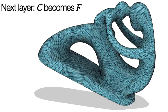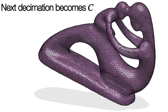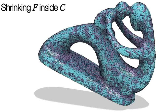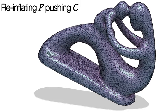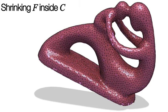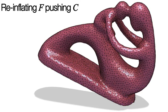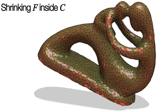Then we move to the next pair, treating the previously computed coarse cage now as the fine mesh and the next input decimation as the coarse mesh. We flow and reinflate. We repeat with all subsequent pairs to build a set of nested cages.